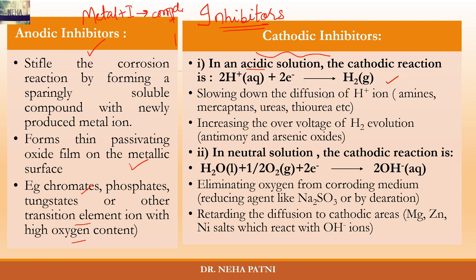To inhibit the cathodic reaction in an acidic solution, where the reaction involves evolution of hydrogen gas, you have to slow down the diffusion of H+ ions to the cathode — either by increasing the over-voltage of hydrogen evolution or by adding organic inhibitors like amines, mercaptans, heterocyclic nitrogen compounds, or substituted ureas and thioureas, which are capable of being adsorbed at the metal surface. Antimony and arsenic oxide are also used as inhibitors because they deposit a thin film of metallic arsenic or antimony at the cathodic area, thereby increasing the hydrogen over-voltage.